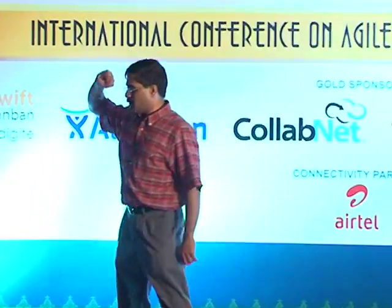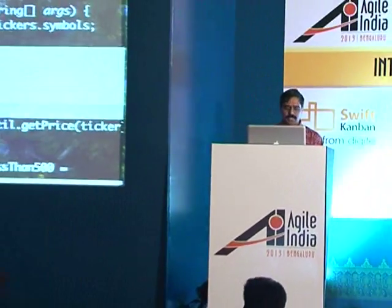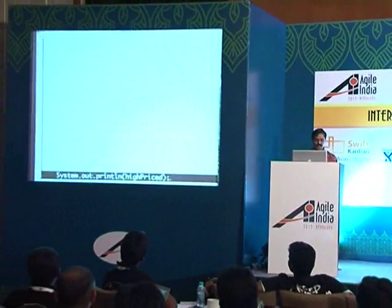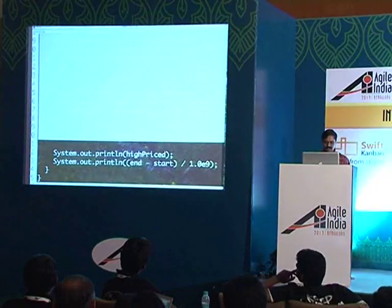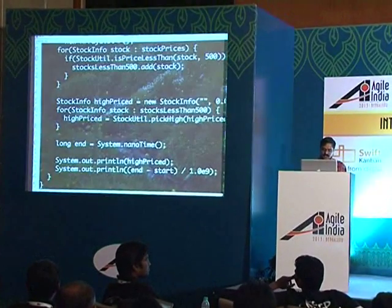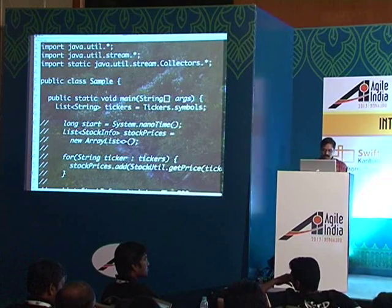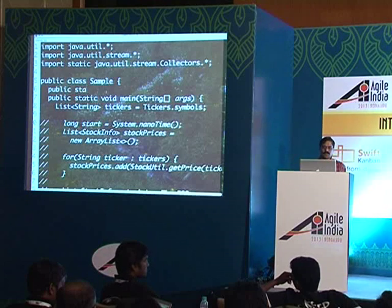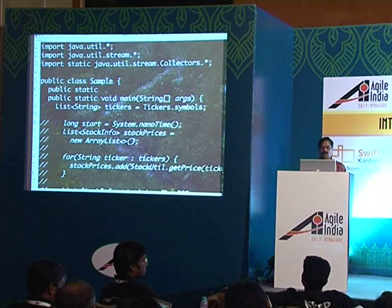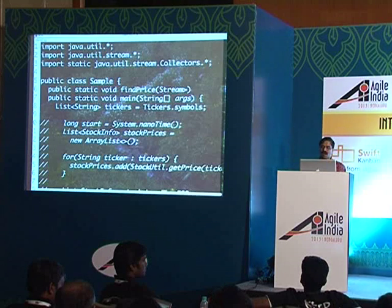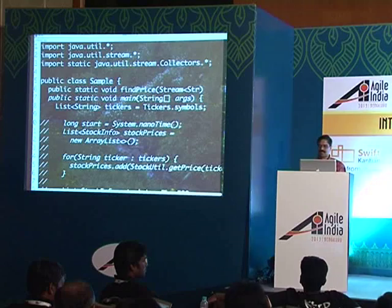So 61 seconds and $430.47 — can somebody note this down so we can verify the functional version gives the same result. Now let's go back and write this again. How many lines of code did I write? About 20 lines. Let's try this differently — I'm going to say public static, and create a findPrice method that takes a stream of strings.